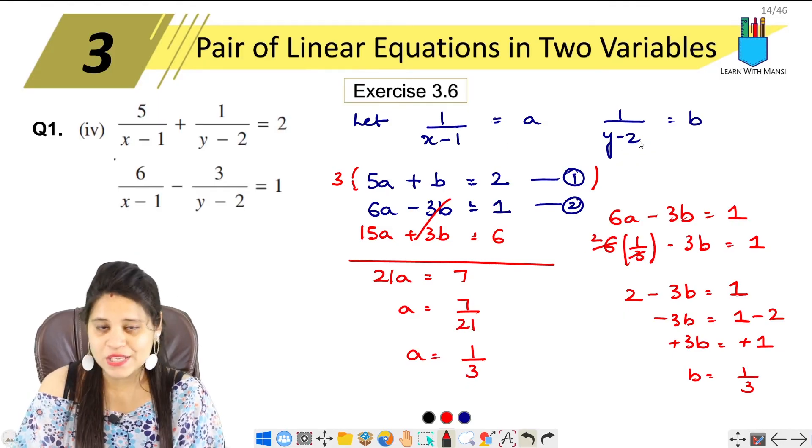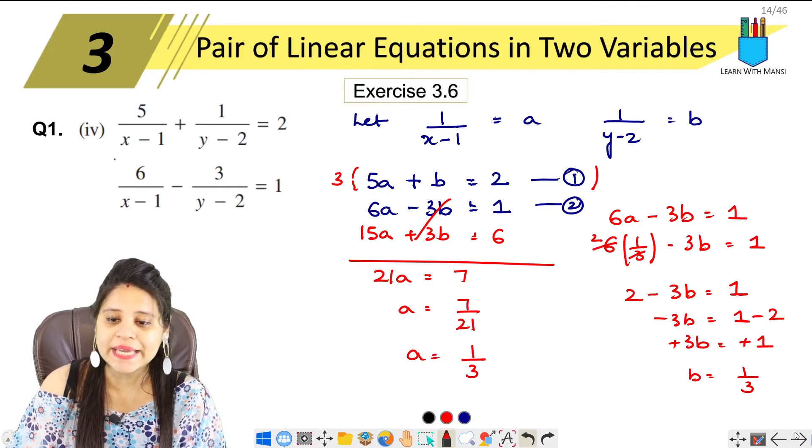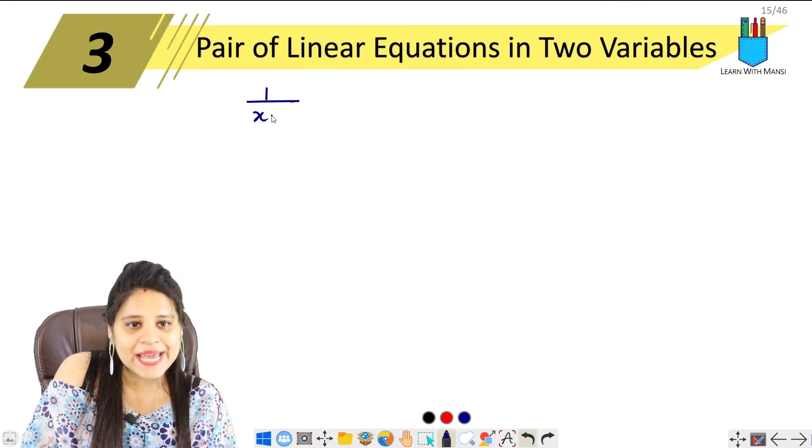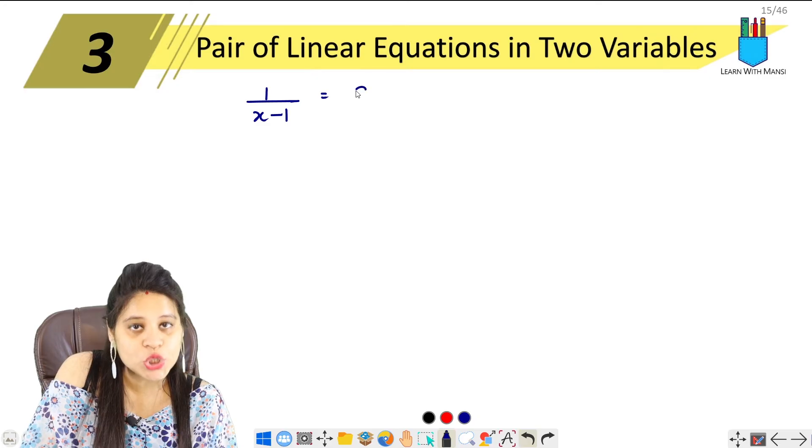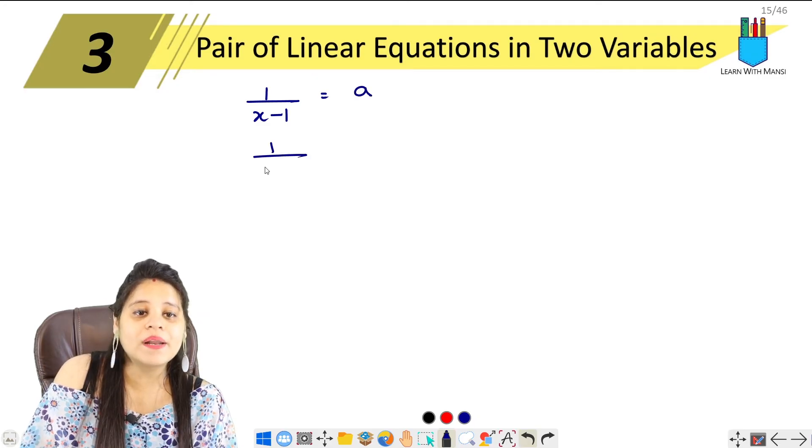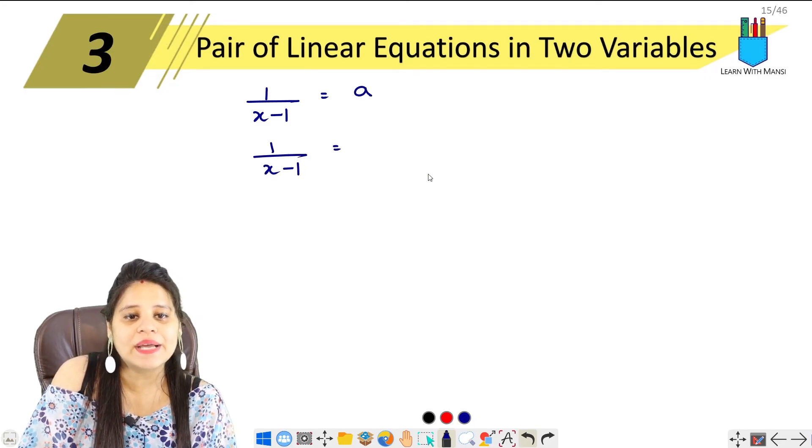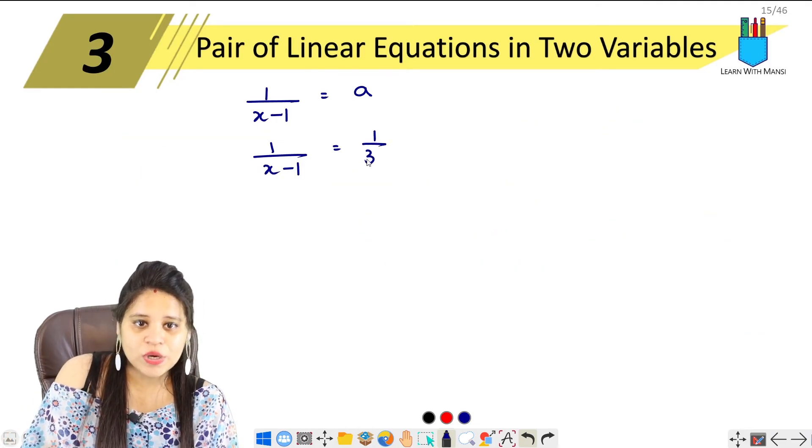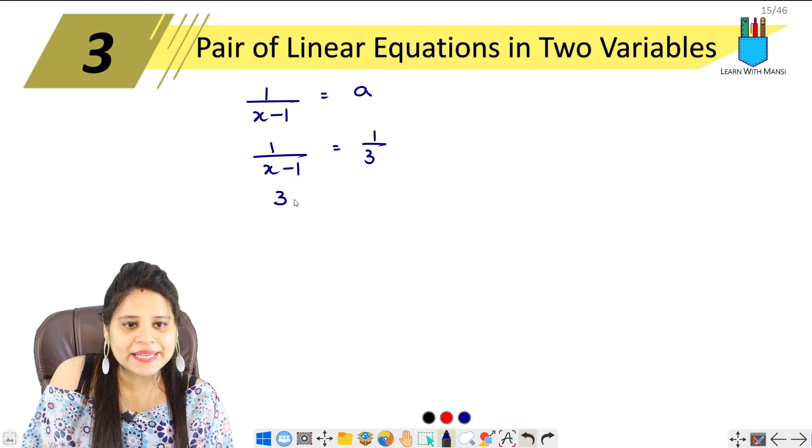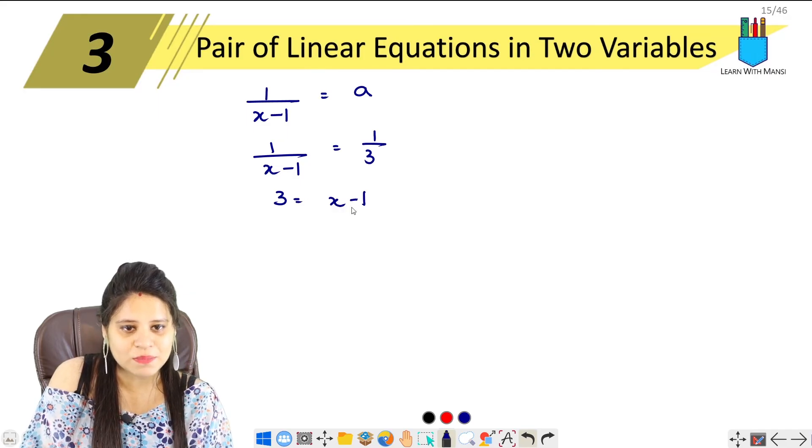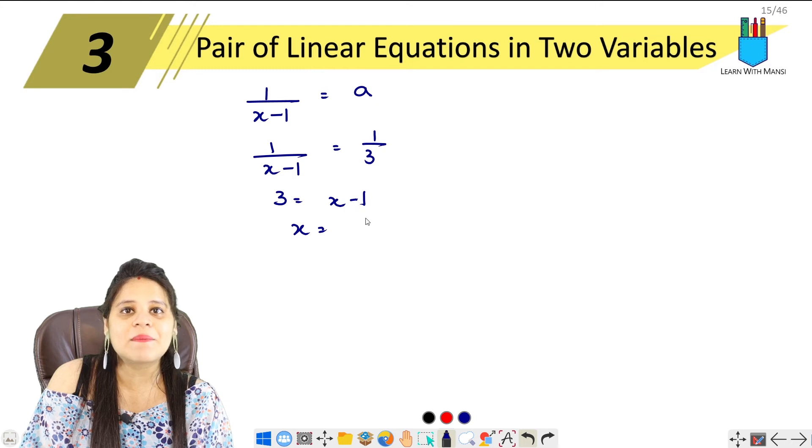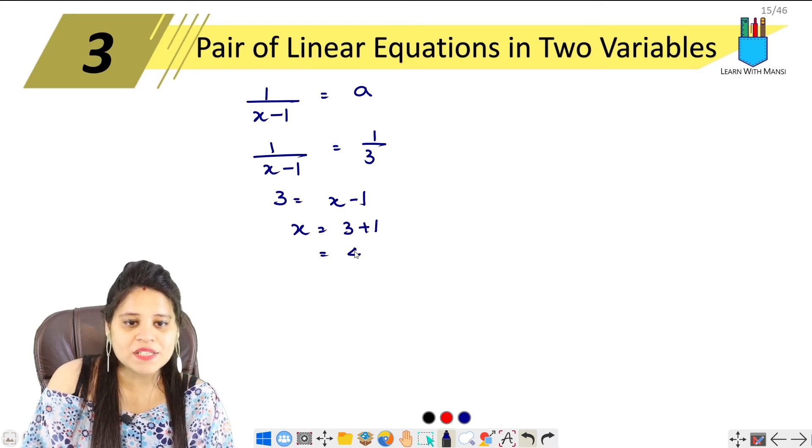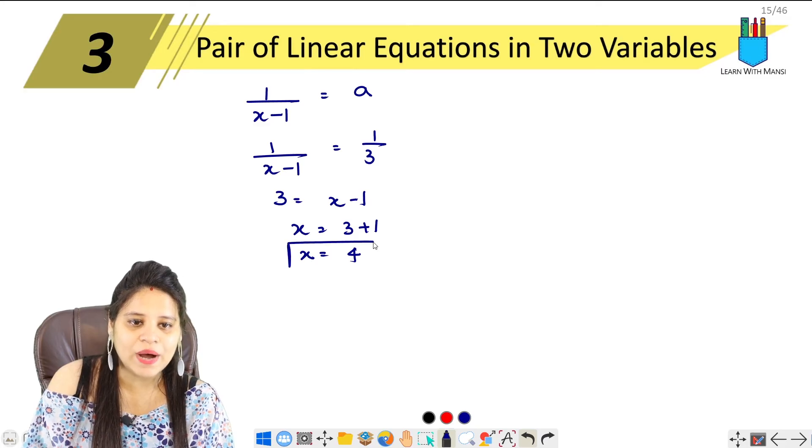Now we find x and y values. 1 upon x minus 1 equals to a. So 1 upon x minus 1 equals to 1 upon 3. Cross multiply: 3 equals x minus 1. So x equals 3 plus 1 equals 4. So x value is 4.